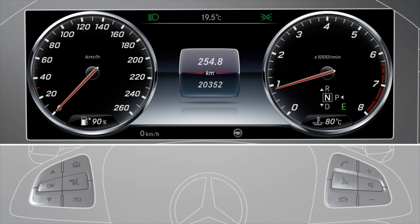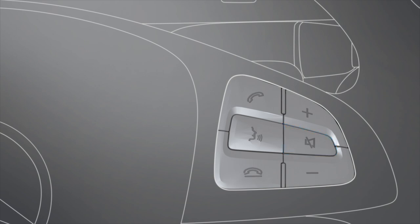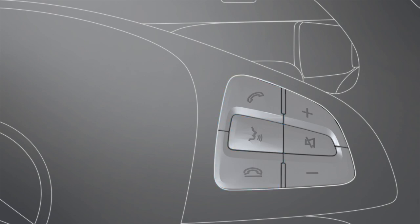You can switch off LinguaTronic using the corresponding button. The right-hand buttons allow you to set the desired volume. You can also use the relevant buttons to turn the sound on or off, as well as to make calls or reject incoming calls. Using the control panel on the right, you can also activate LinguaTronic.